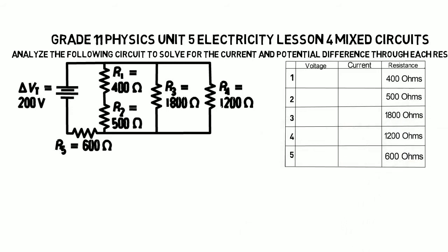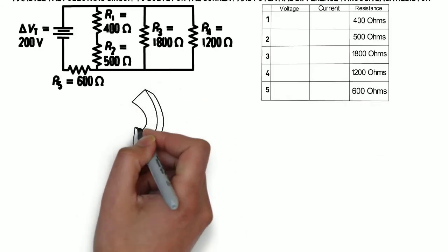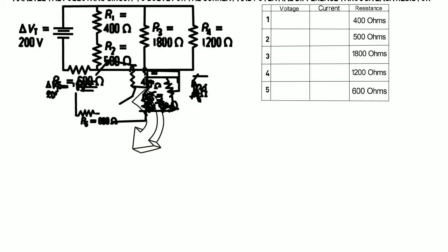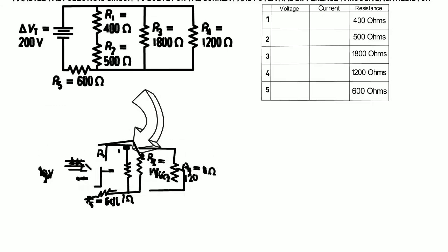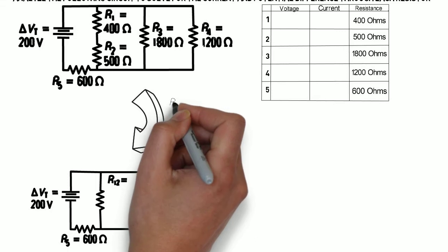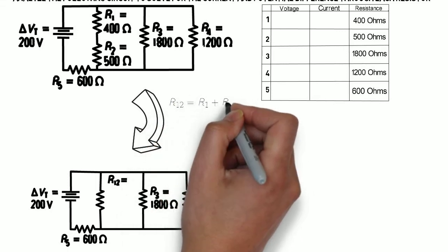Now going back and looking at the circuit, we need to make this circuit a little bit more simple before we can solve it. Looking at resistance 1 and resistance 2, these are two resistors in series. We can simplify this a little bit by replacing those two resistors with one resistor that has an equivalent resistance of the two combined.